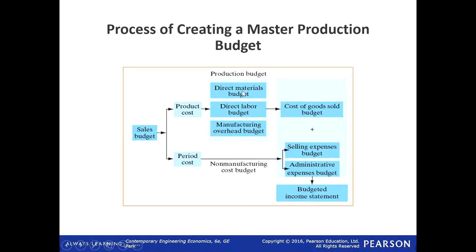How do we manufacture? You have your material, you have labor, and you have overhead. How much expected material are we going to use? How much labor are we going to use? And how much will be the estimated overhead? From these three we know our product cost. From these three we can prepare our cost of goods sold. Sales minus cost of goods sold. Also our other expense is the selling expense and admin expense budget, which we call non-manufacturing costs — period costs.